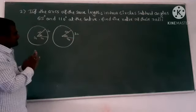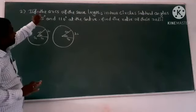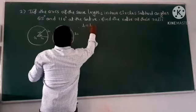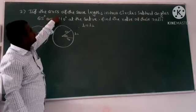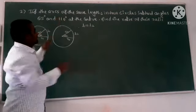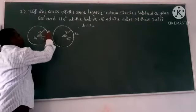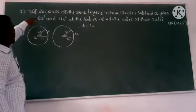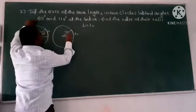There are two circles. If the arcs of length are more minor, so L1 is equal to L2. If the arcs of length are more minor, L1 is equal to L2. But the angle is equal to 65 degrees here, and 110 degrees.